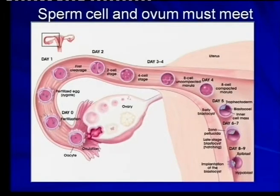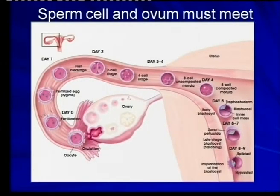Remember: fertilization occurs in the fallopian tube. During fertilization, a sperm cell with 23 chromosomes and an egg cell with 23 chromosomes fuse to become a zygote with 46 chromosomes.